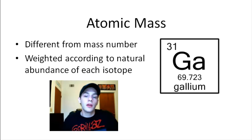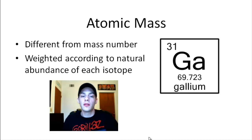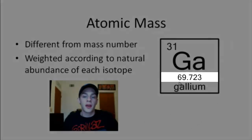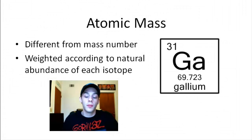In this example I've chosen gallium. Gallium has an atomic mass of 69.723 AMU — that long-winded number that appears just below the chemical symbol on the periodic table. This number is weighted according to the natural abundance of all the naturally occurring isotopes of gallium.